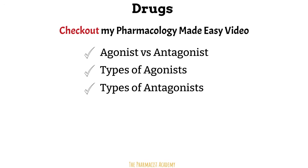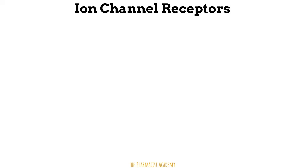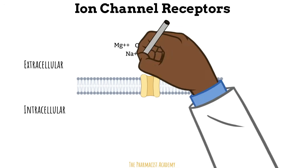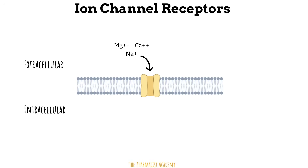Drugs bind to different types of receptors and we can categorize them into four main ones. First is the ion channel receptors. Once the ligand binds, it opens the middle and allows ions to move into the cell. This one is pretty straightforward.